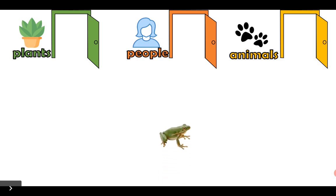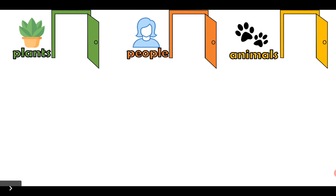We've got a frog! What type of living thing is a frog? Is it a plant? Is it a person? Or is it an animal? Fantastic! A frog is an animal — an amphibian animal. It's a vertebrate with a backbone, remember?